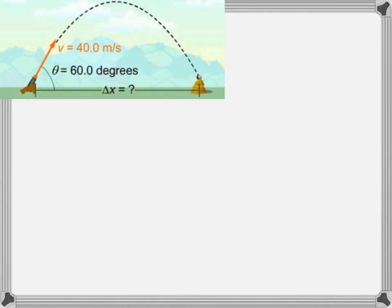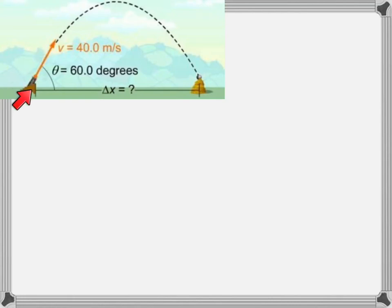In our example here, what you see is a cannonball being shot out of a cannon. This cannon, unlike the previous video, is now on level ground with where it will hit its target. The difference is now that we are not firing the projectile horizontally — we're firing it at an angle, and either that angle will be given to you or we have to calculate it. The speed of the projectile as it's being launched also needs to be given.